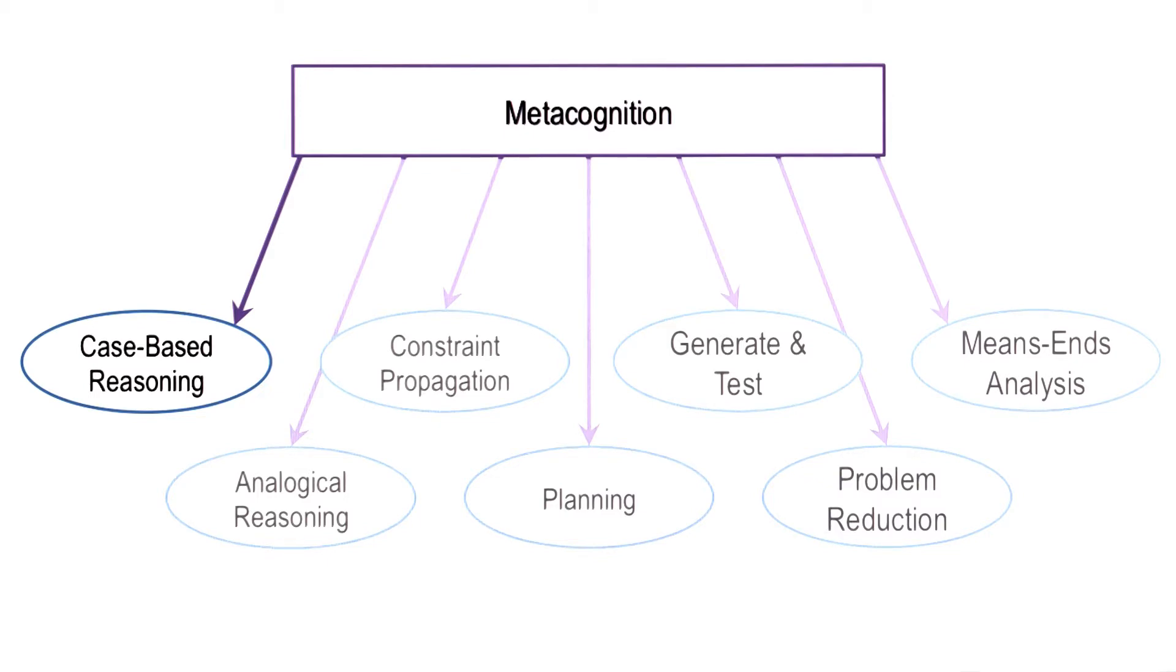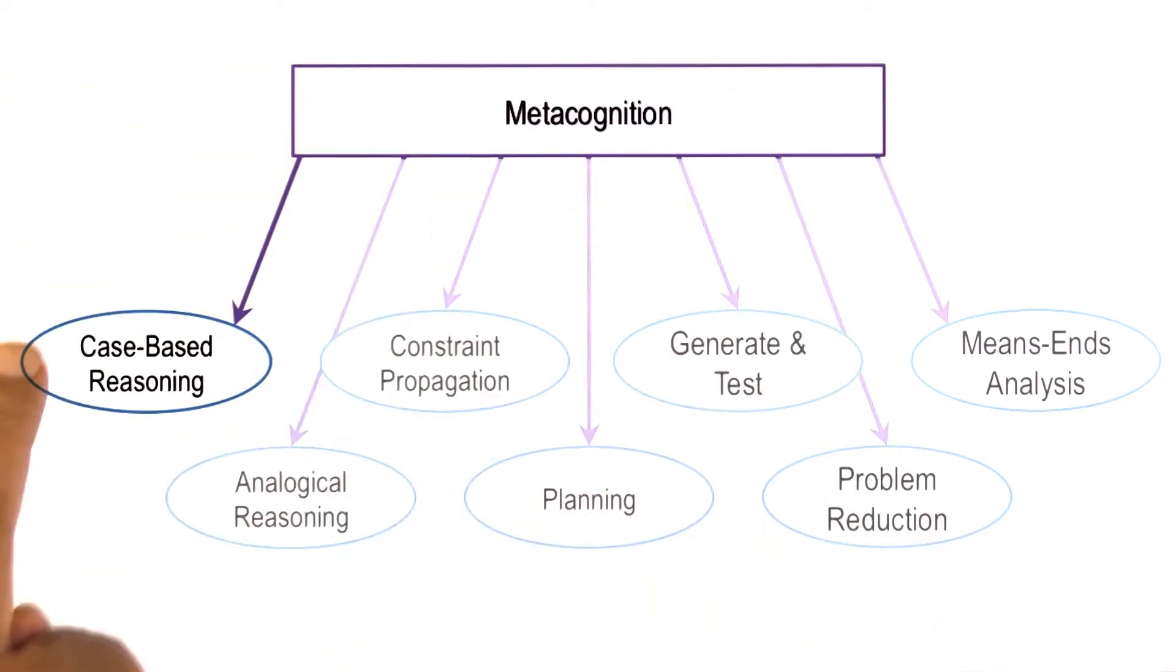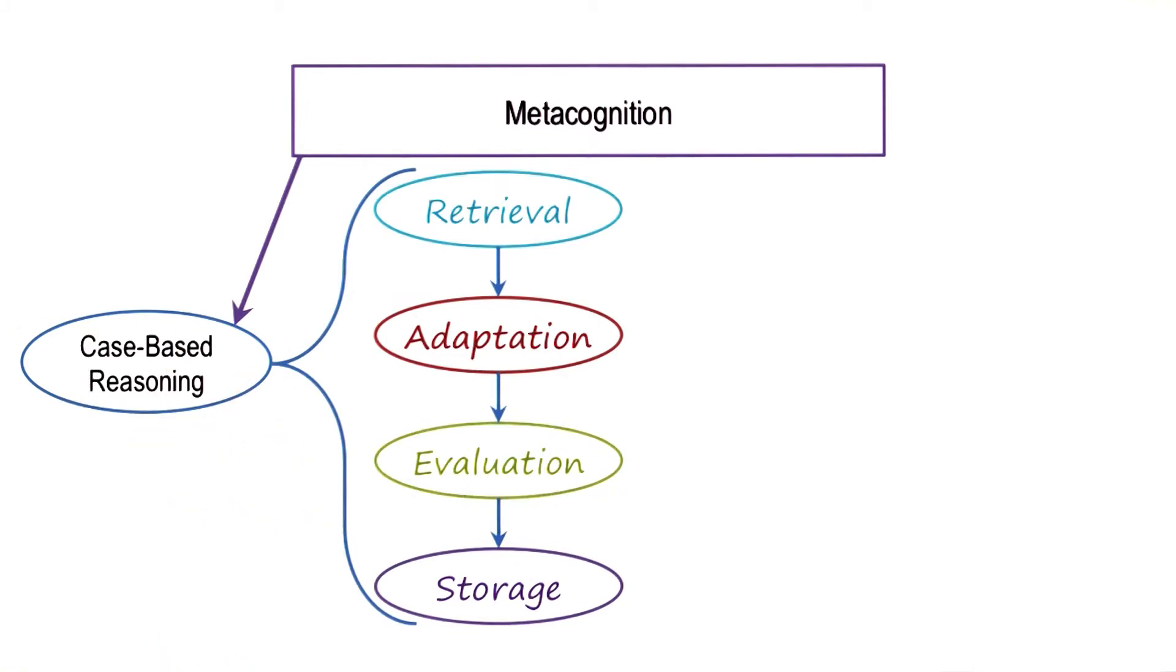As an example, consider that for a given problem, metacognition decides to select the strategy of case-based reasoning. Now case-based reasoning spawns a number of subtasks: retrieval, adaptation, evaluation, and storage.